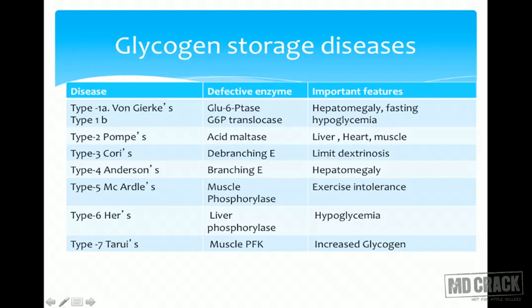Type 5 is McArdle's disease, caused by deficiency of muscle phosphorylase. The muscle cannot break down glycogen, resulting in exercise intolerance. Type 6 is Hers' disease, due to liver phosphorylase deficiency, characterized by hypoglycemia. Type 7 (Tarui's disease) is also due to muscle phosphorylase deficiency with increased glycogen storage.